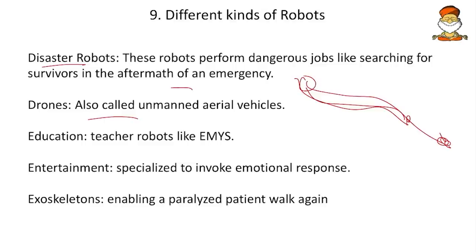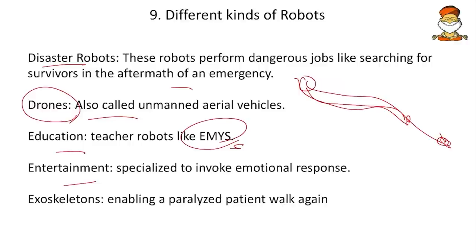Drones are robots themselves — they can move, manipulate, and spray pesticides. A question on drones appeared in the 2020 prelims. In education, robotic teachers like Emmy can teach like a normal human being. In entertainment, robots are specialized to give emotions or heroic effects for excessive entertainment, and chatbots can provide company for older people to rid off loneliness.